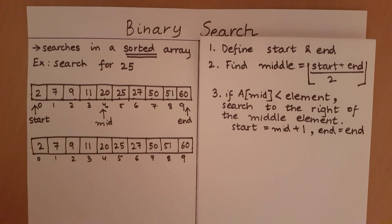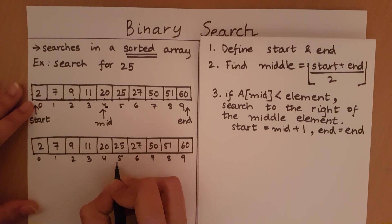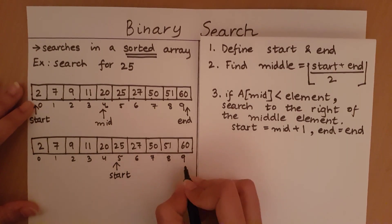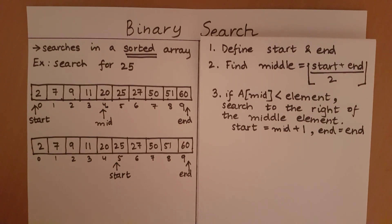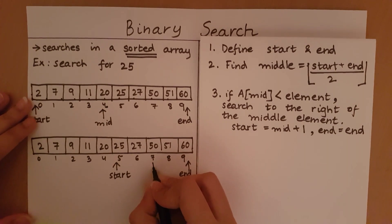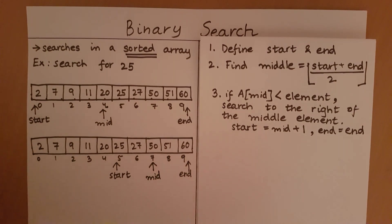Start is updated to middle plus 1, which is 4 plus 1, which equals 5. End remains as it is. Now we have defined the new start and end. The next step is to find the middle: 9 plus 5 divided by 2 equals 14 divided by 2, which equals 7. So 7 will be our new middle index.